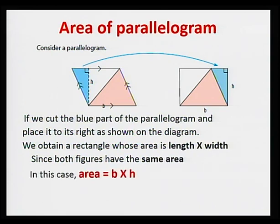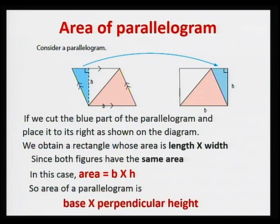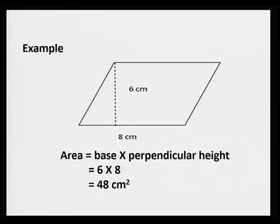Area of the parallelogram is base times height. Again, here we are talking about perpendicular height, same as for triangles. Let's take an example. This is a parallelogram with base 8 centimeters and height 6 centimeters. The area equals base times perpendicular height, equal to 6 times 8, equal to 48 centimeters squared.